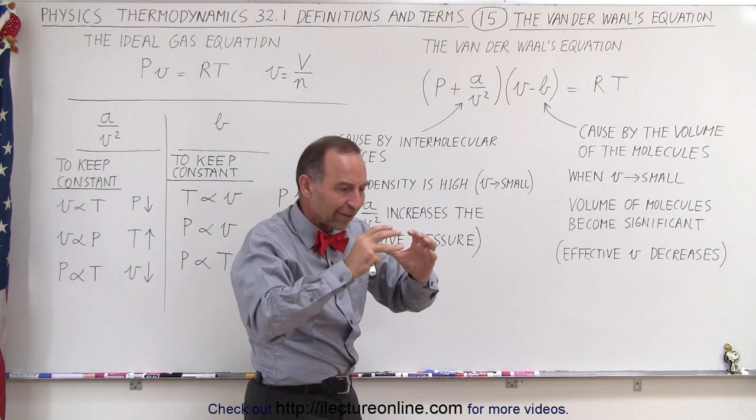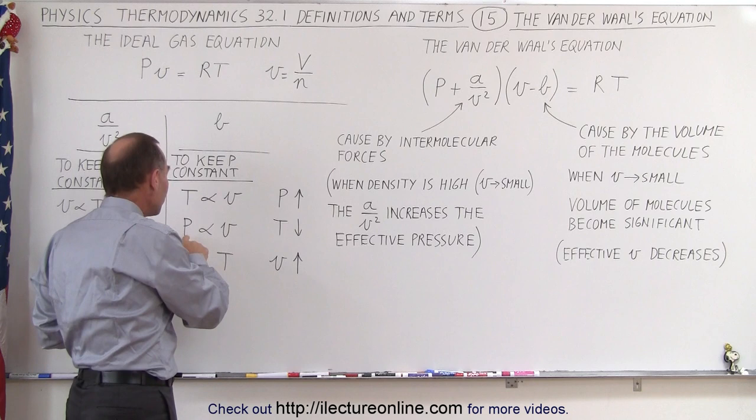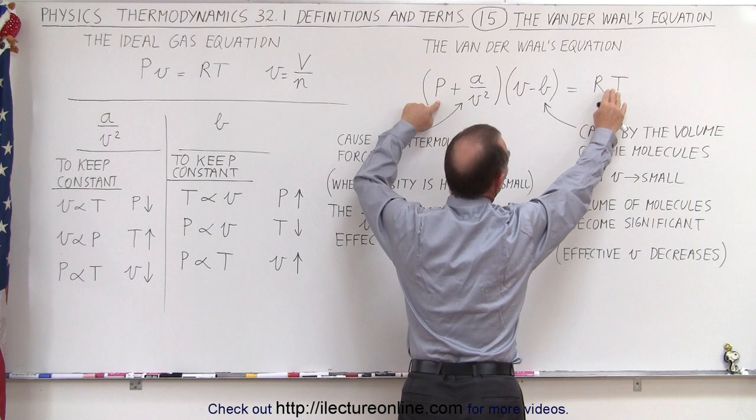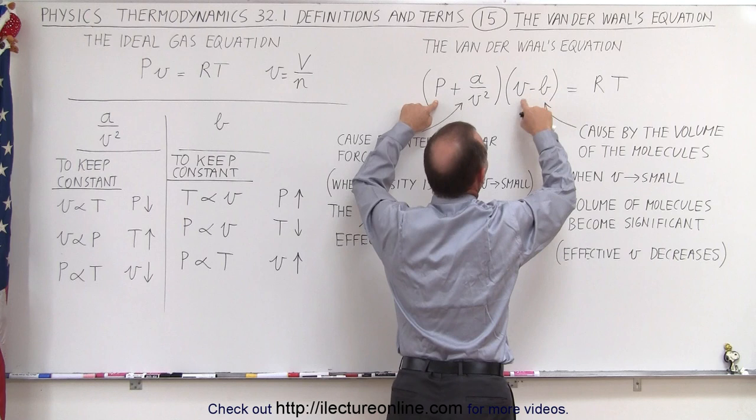In other words, if you account for the volume of the molecules, then there is less volume and the pressure will go up. If the pressure and the volume remain constant, how does it affect the temperature? What do we need to do to the temperature to keep the pressure and the volume constant?